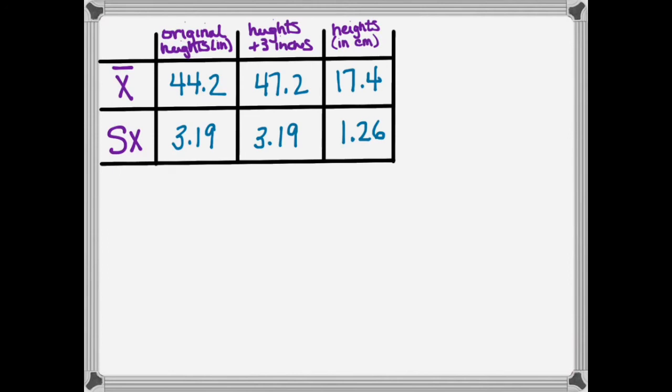Let's take a look at how dividing affects our situation. If we're looking at the original mean of 44.2 and the new mean of 17.4, that relationship's not as easy to think about as the addition was. Let's think about what we did to those heights. I know that I divided each height in the list by 2.54.